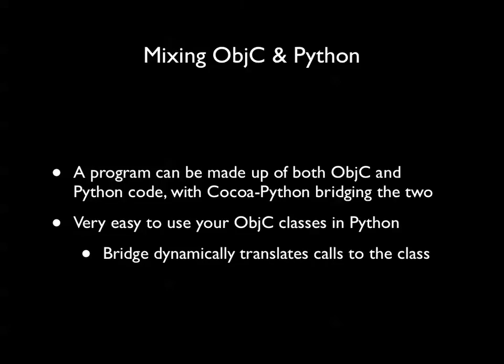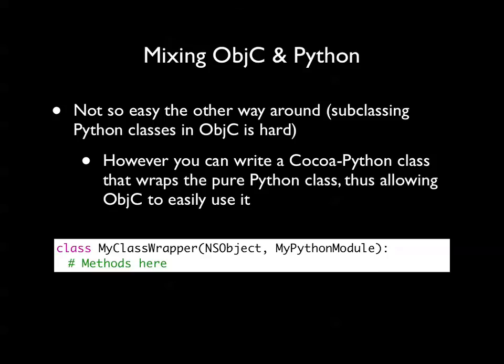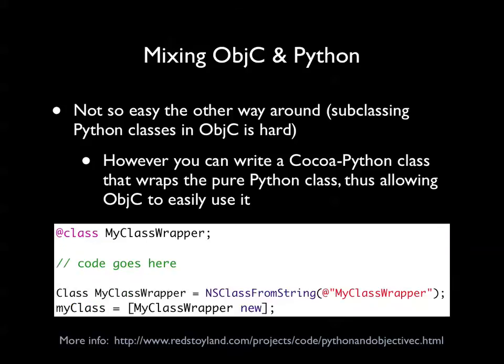You can mix Objective-C code and Python code in the same application without a problem. It's very easy to use Objective-C classes written in Objective-C from Python — if you want to expand an Objective-C application or add Objective-C code to your Python application, the bridge automatically takes care of that. All you have to do is have it in your Xcode project. Going the other way is a bit harder — Objective-C does not know about Python all that well. What you want to do is generally wrap your Python code with Cocoa Python objects so that Objective-C can see it as an Objective-C class.